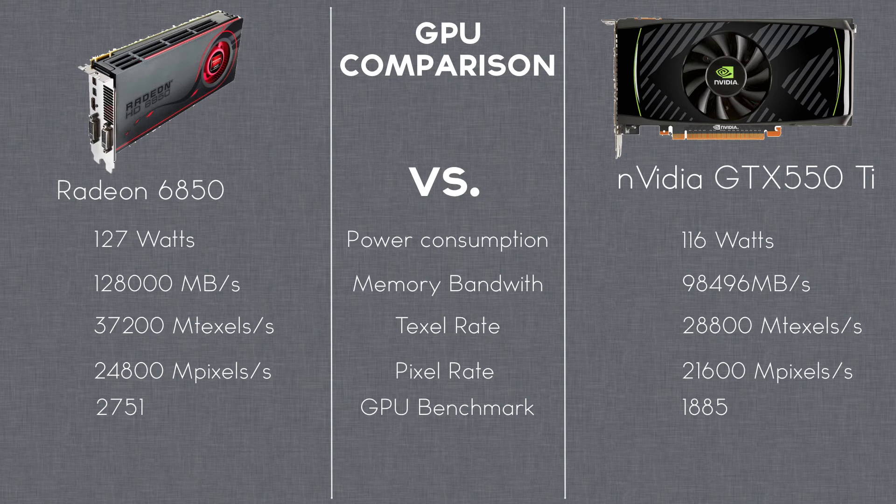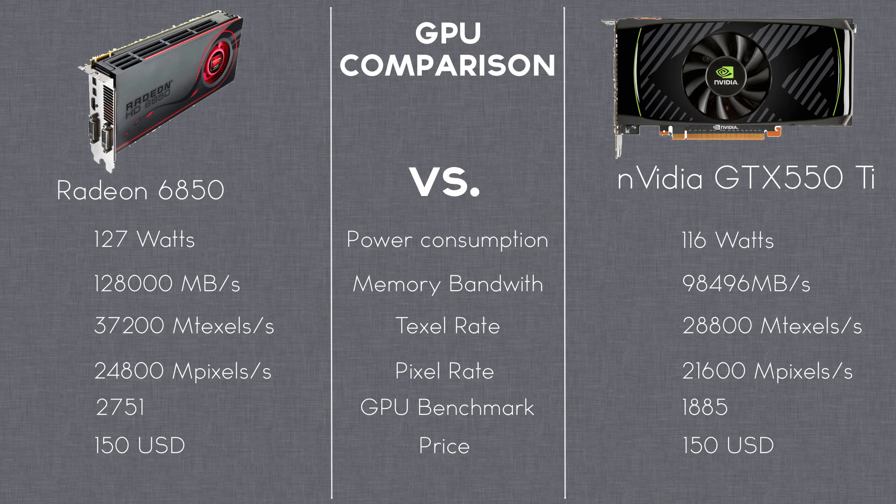The last category is the price. The 6850 price ranges at about $150, and the GTX 550 Ti also ranges at $150. In a nutshell, the HD Radeon 6850 is about 25% faster than the GTX 550 Ti.